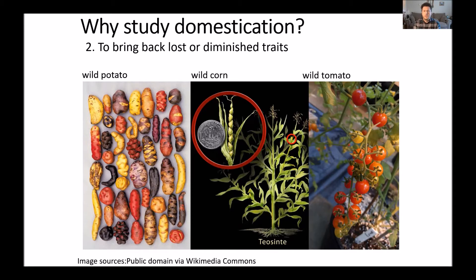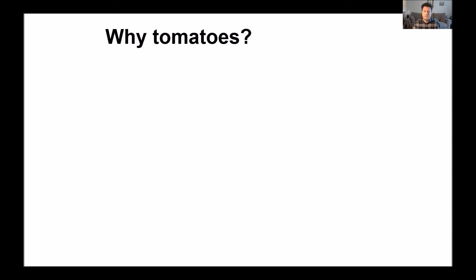For example, in many crops such as tomatoes, corn, and potatoes, the wild ancestor is more drought resistant or more resistant to diseases, and it will be very useful for modern agriculture to bring back some of those traits from the wild ancestors.